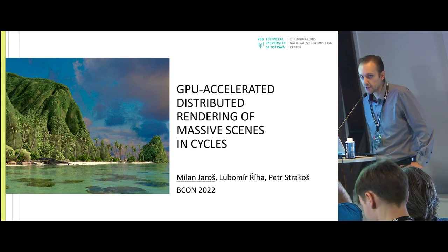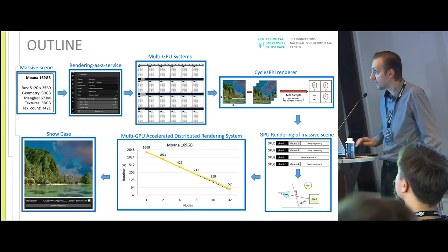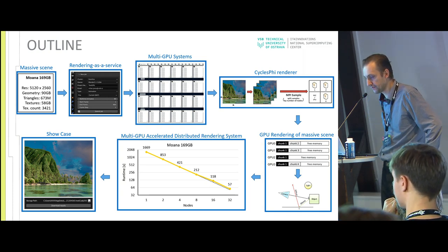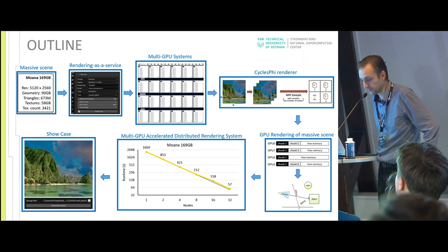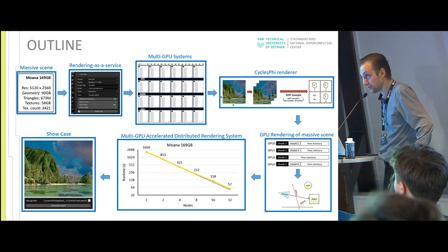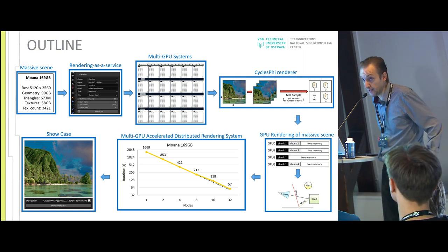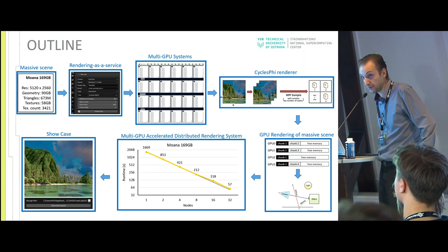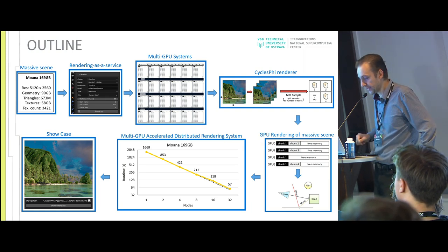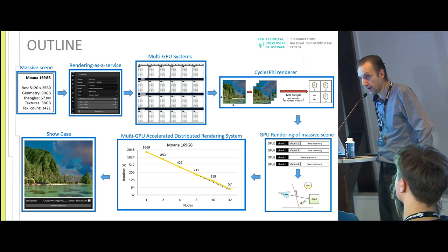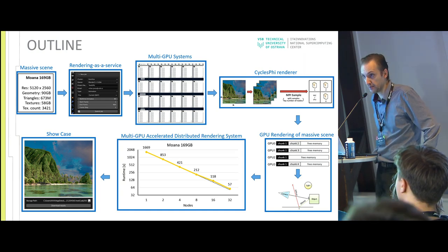Today I would like to talk about our extension for rendering of massive scenes in Blender. First, I will describe what a massive scene means for us, then show how our rendering service works, describe two state-of-the-art systems for multi-GPU, show the CyclesFi renderer — our extension for Cycles on HPC systems — describe two methods supporting rendering of massive scenes, show how it works on multi-GPU nodes, and finally show a use case from our visualization lab.